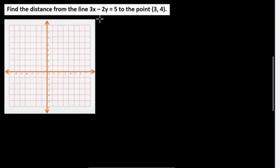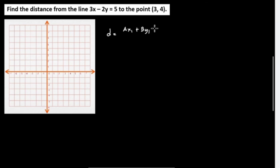Example: Find the distance from the line 3X minus 2Y equals 5 to the point (3, 4). We will use the distance formula: D equals the absolute value of AX₁ plus BY₁ plus C, all over the square root of A squared plus B squared. The absolute value means the result is always a positive value, whether negative or positive.